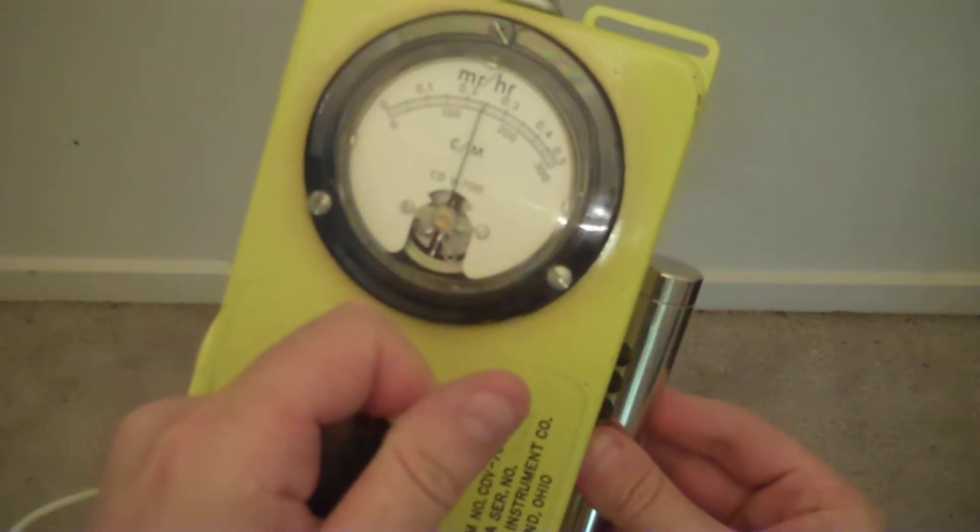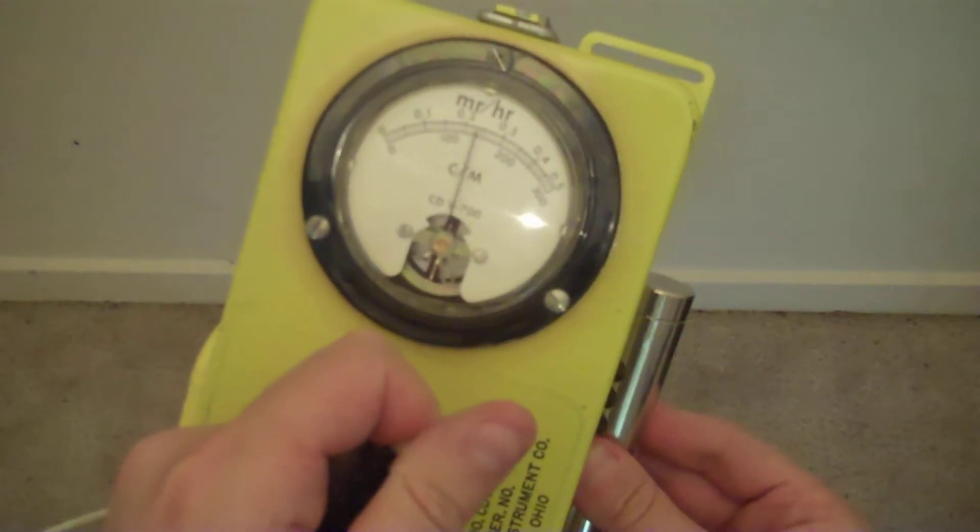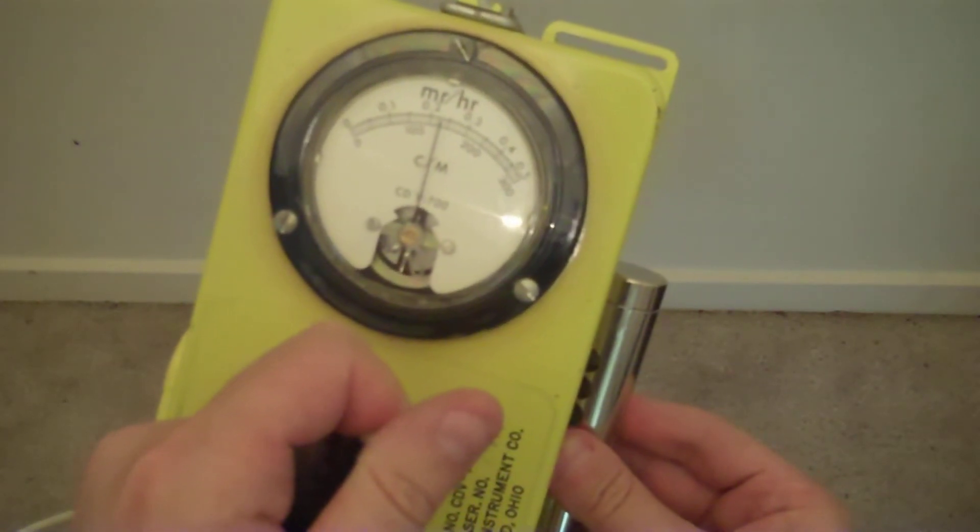As you can see, we are reading between 2 and 3 millirenkens per hour on the times 10 scale, so we know that we are calibrated.